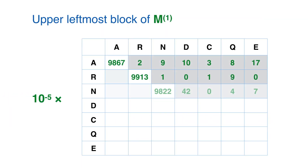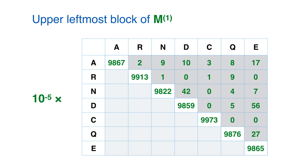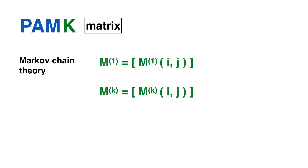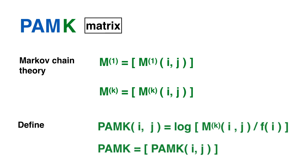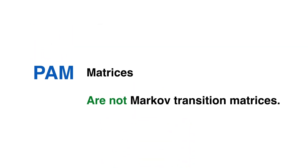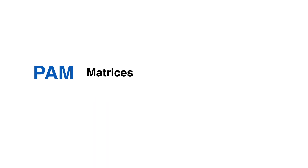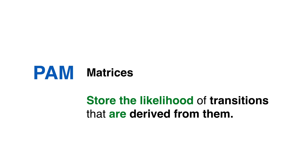Each entry in a PAM matrix indicates the likelihood of the amino acid of that row being replaced with the amino acid of that column through a series of one or more point accepted mutations during a specified evolutionary interval, rather than these two amino acids being aligned due to chance. Since M1 is a mutation transition probability matrix, Markov theory is applicable. PAMk is thus defined as the log odds ratio of the probabilities in Mk over the frequencies. It is worth remarking that PAM matrices are not Markov transition matrices, but matrices storing the likelihood of transitions derived from them.